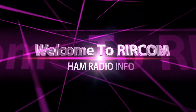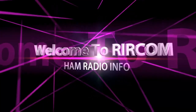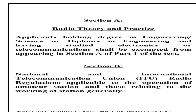Welcome to RIR.com. Syllabus for the Amateur Station Operator's License - Restricted and General. The examination shall consist of the following two parts. Part 1: Written Test. It shall comprise of one paper containing two sections: Section A and Section B.